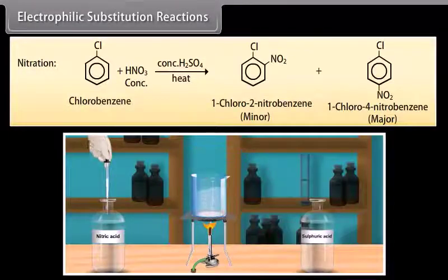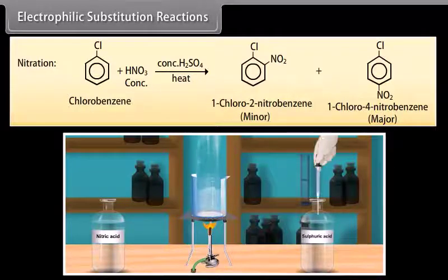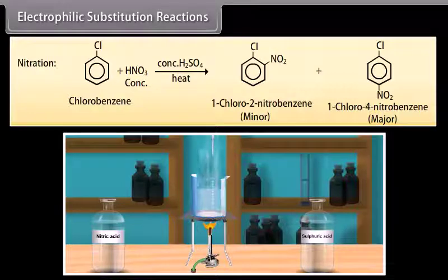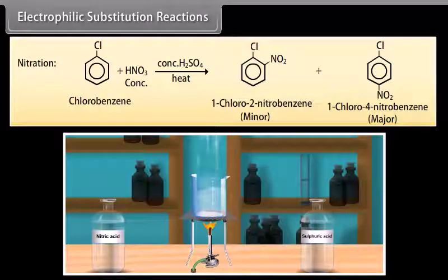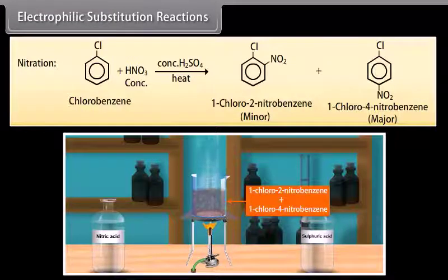Nitration. When chlorobenzene solution is mixed with nitric acid and then we add concentrated sulfuric acid, it reacts to give 1,2-nitrobenzene which is a minor product and 1,4-nitrobenzene which is a major product.